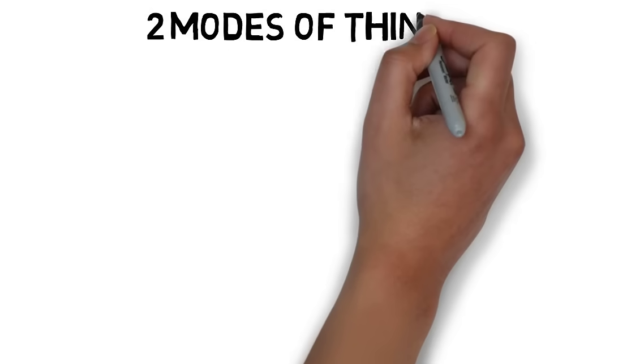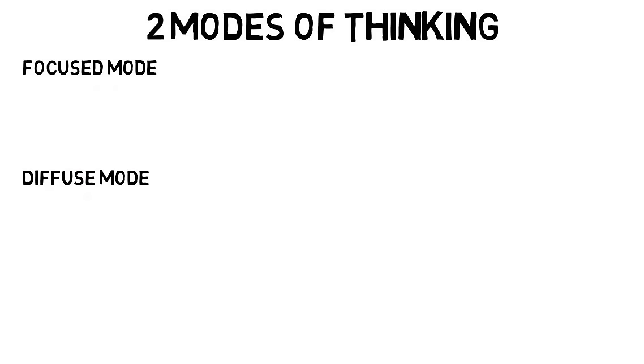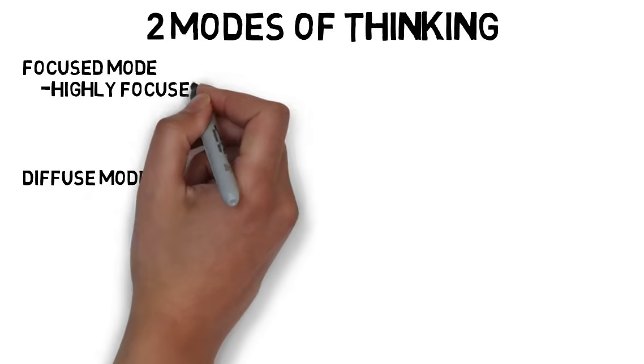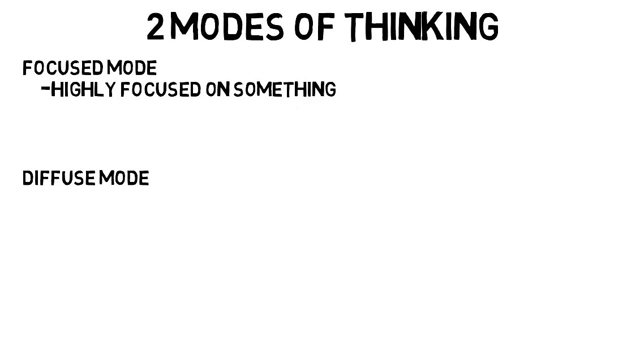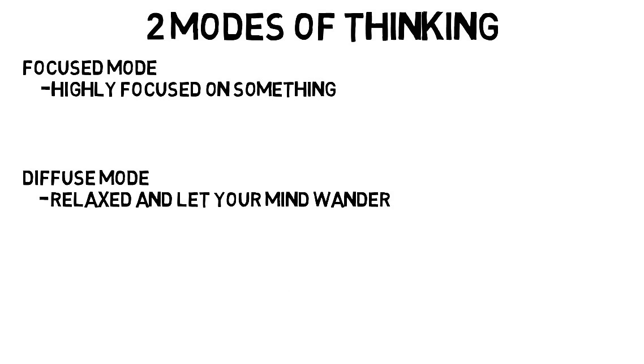Now there are two modes of thinking you need to be aware of. Focus mode and diffuse mode. Focus mode is obvious. It's when you are highly focused on something, like attempting a difficult math problem with no distractions. Diffuse mode is what happens when you're more relaxed and let your mind wander. Basically just like taking a break.